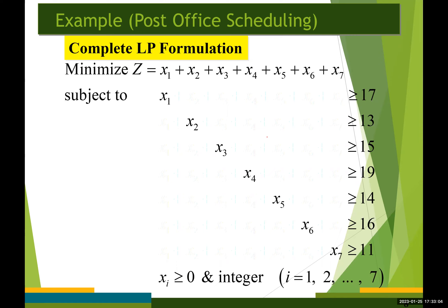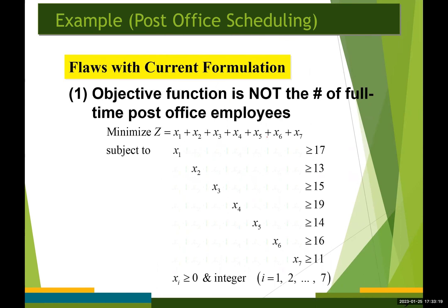Do you think this is correct? What is wrong with the current formulation? Actually, there are at least two flaws in this formulation. The first flaw is that the objective function is not the total number of full-time employees. The current objective function counts each employee five times, not just once.